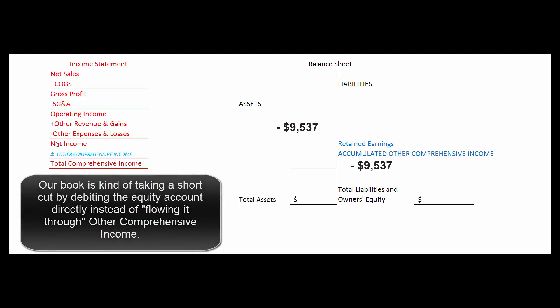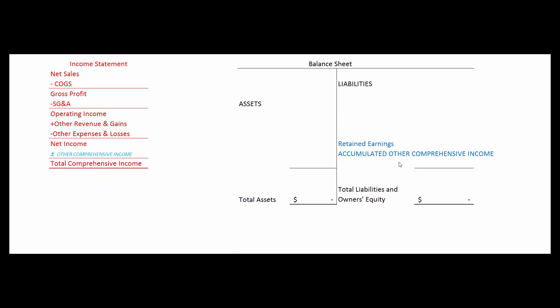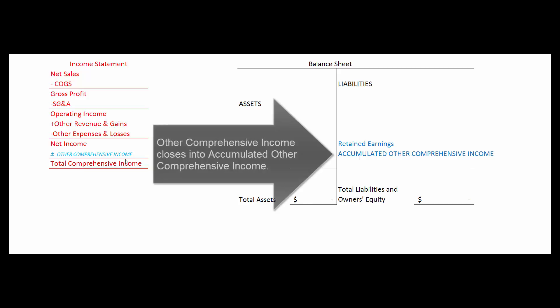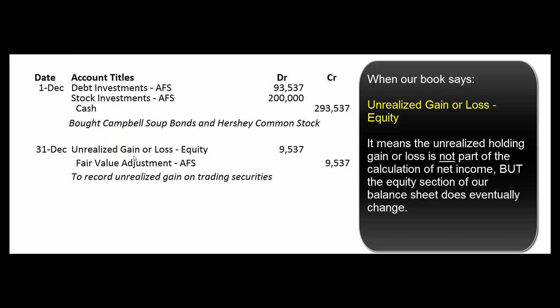What really happens is that the unrealized loss flows through something called other comprehensive income — things that haven't happened yet but are important enough to disclose, such as unexpected gains or losses in pension fund assets, foreign subsidiary translation adjustments, or in this case unrealized gains or losses on available-for-sale securities. They don't show up as part of net income, but we do record them by increasing or decreasing equity. Other comprehensive income closes into accumulated other comprehensive income. Our beginning accounting textbook shortcuts all of this by simply recording unrealized gain or loss — equity of $9,537, since equity is on the right-hand side of the balance sheet, increases with credits, and decreases with debits.